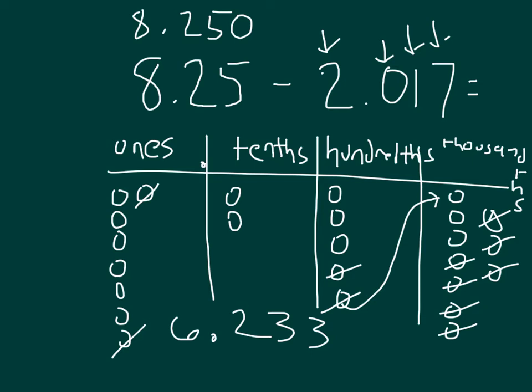If we look at that, we can think about the inverse operation — adding 17 thousandths back in. 17 and 33 is 50, and so we would have that 250 which matches our original number when we add back in the two 1s as well.